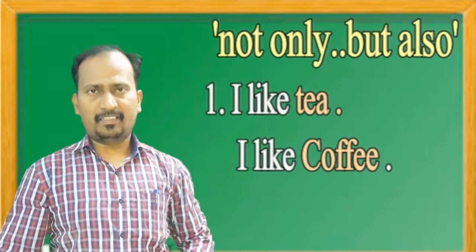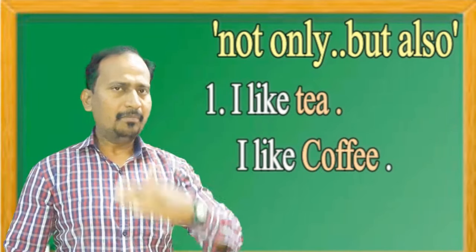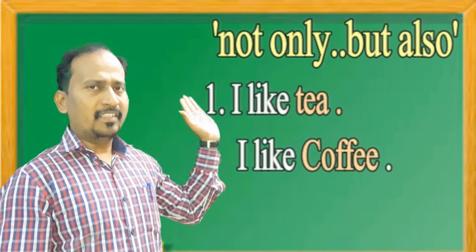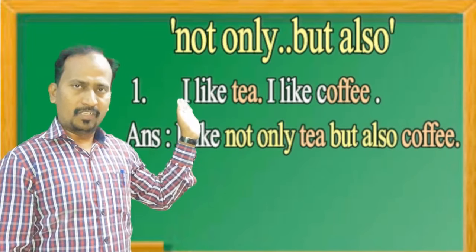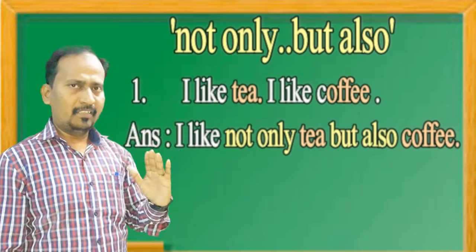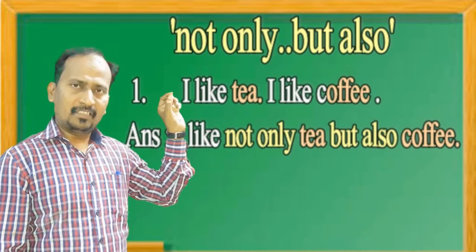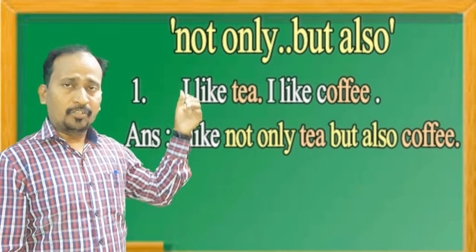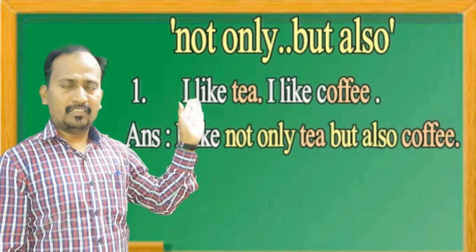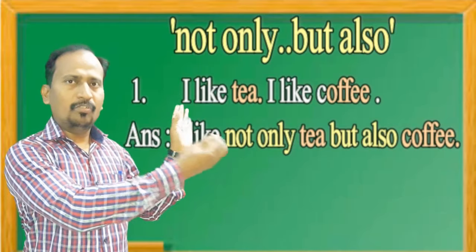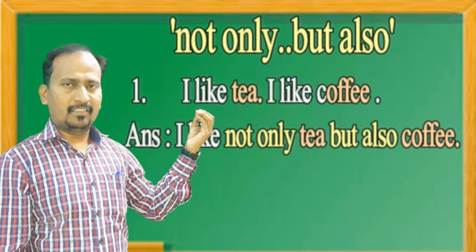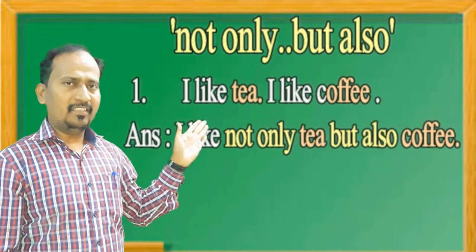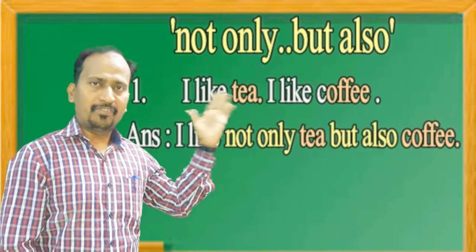We underline the different words first. Now, how do we use 'not only but also'? Before the underlined word in the first sentence, we place 'not only', and then we connect the underlined word from the next sentence using 'but also'. So the answer is: I like not only tea but also coffee.